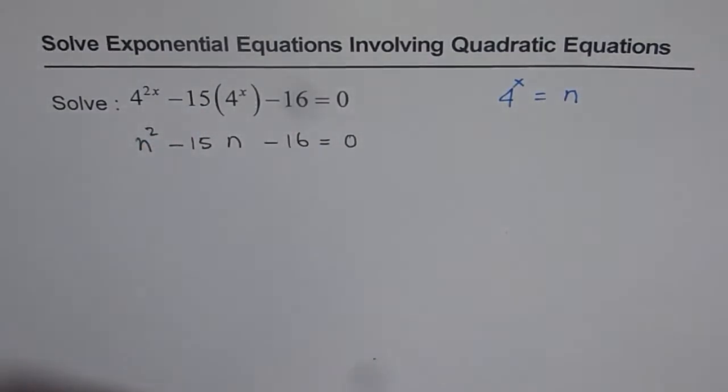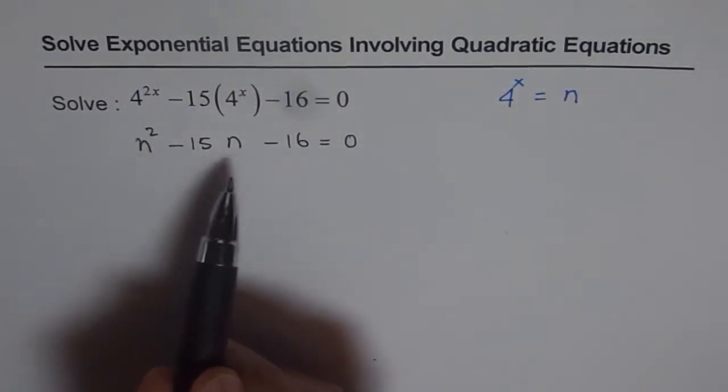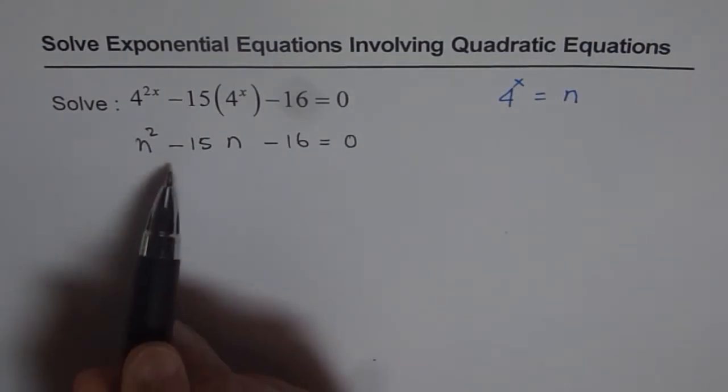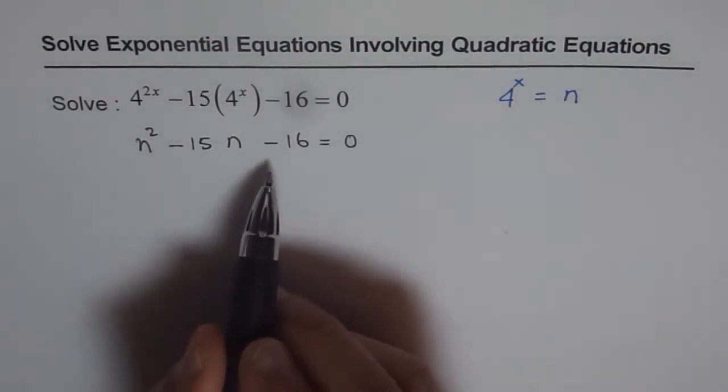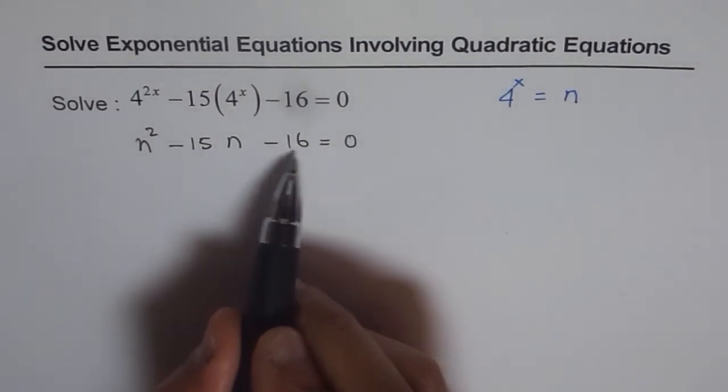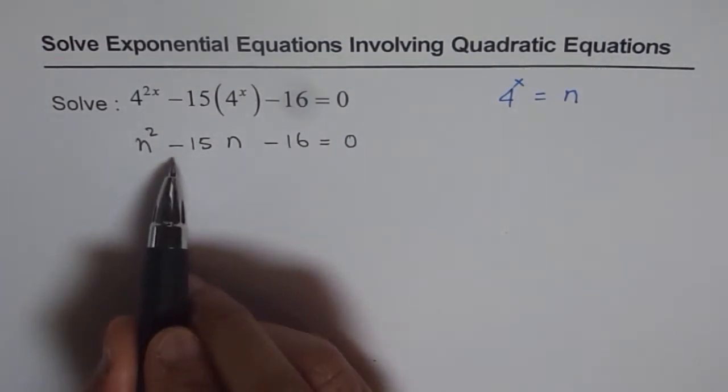Our exponential equation has been transformed into a quadratic equation. Now this can be factored and we can solve for n. We are looking for two numbers whose product is -16 and sum is -15.